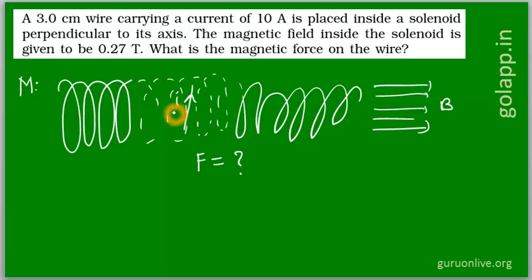Here the conductor is placed perpendicular to the field, so the angle between the field and the current-carrying conductor is 90 degrees. From this, our motto is to find the force acting on the current-carrying conductor.